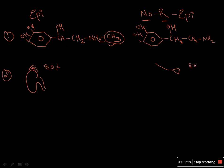Norepinephrine is secreted from the sympathetic nerve endings — around 80 percent of norepinephrine is secreted from the sympathetic nerve endings. The rest is vice versa: 20 percent of norepinephrine is secreted from the adrenal medulla, and around 20 percent of epinephrine is also secreted from the sympathetic nerve endings.